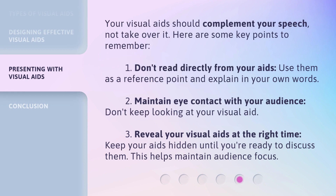Your visual aids should complement your speech, not take over it. Here are some key points to remember. First, don't read directly from your aids — use them as a reference point and explain in your own words. Second, maintain eye contact with your audience and don't keep looking at your visual aid. Third, reveal your visual aids at the right time — keep them hidden until you're ready to discuss them. This helps maintain audience focus.